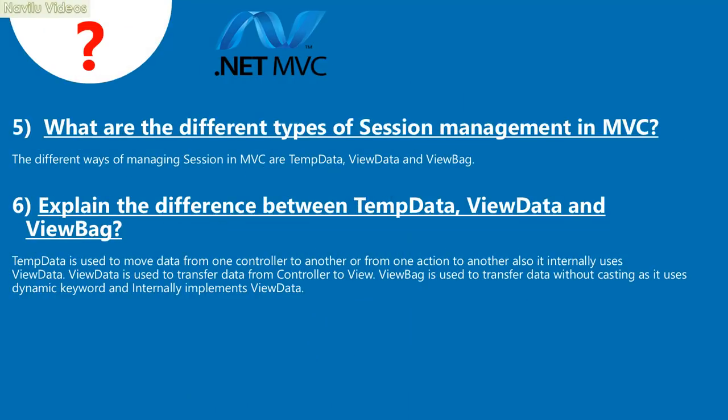Question 5: What are the different types of session management in MVC? The different ways of managing session in MVC are TempData, ViewData, and ViewBag. Question 6: Explain the difference between TempData, ViewData, and ViewBag. TempData is used to move data from one controller to another or from one action to another; it internally uses ViewData. ViewData is used to transfer data from controller to view. ViewBag is used to transfer data without casting as it uses the dynamic keyword and internally implements ViewData.